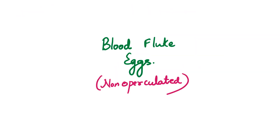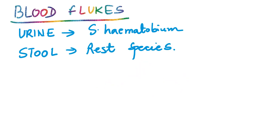Next, we move on to the blood flukes. These produce non-operculated eggs. Blood flukes are Schistosoma species. The word Schistosoma starts with S — so instead of an operculum, they have something starting with S: spines — terminal spine, lateral spine and so on. Most blood flukes — mansoni, japonicum, intercalatum, mekongi — are found in stool, because all adult worms of schistosomes are found in the mesenteric plexuses.